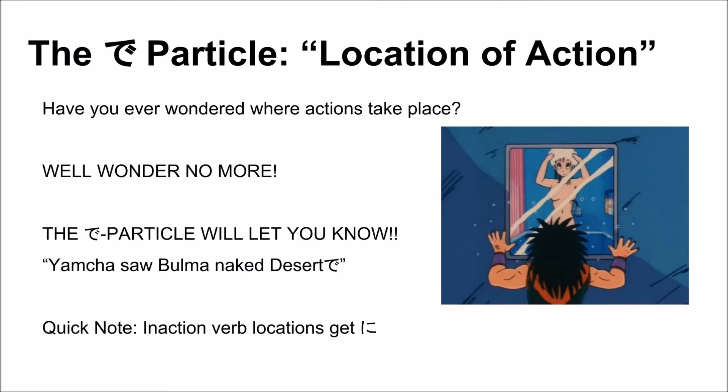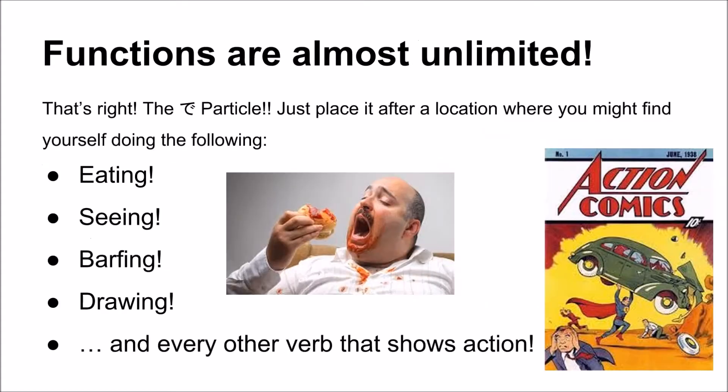Quick note: in action verb locations, use the で particle — not the に particle. The functions are almost unlimited. Are you a fat guy eating a cheeseburger or Superman throwing a car at something? Then you need the で particle. Just place it after a location where you might find yourself doing something.